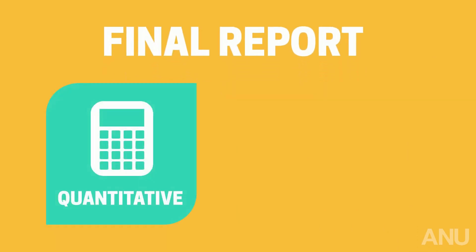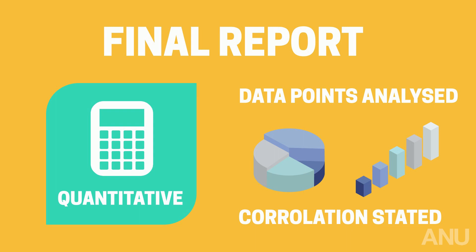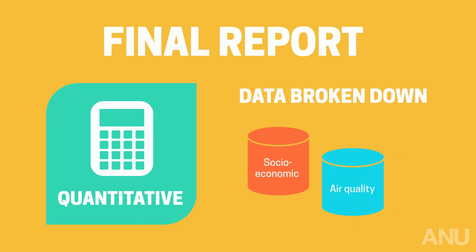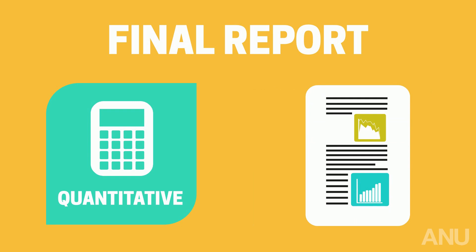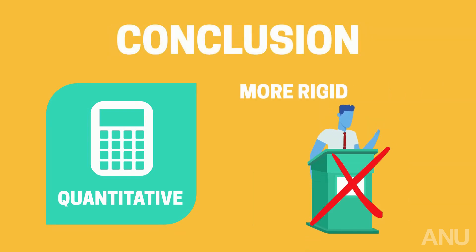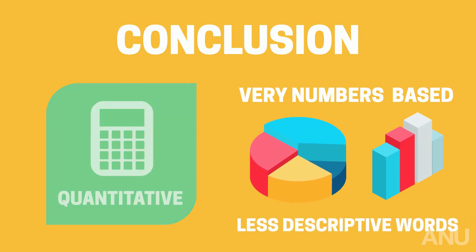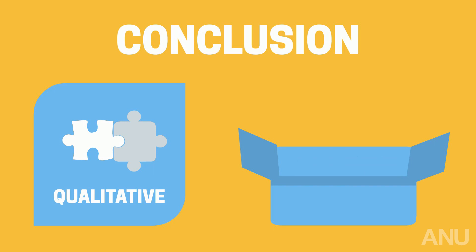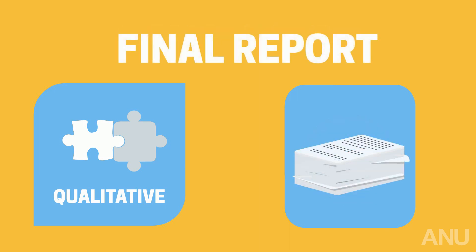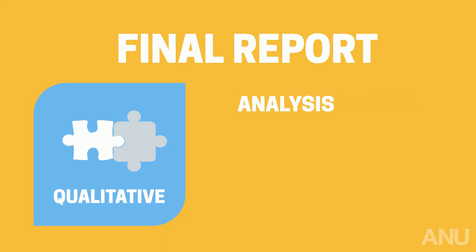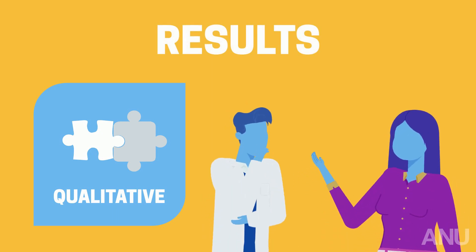For the final report in quantitative research, all the data points are analyzed and the correlation between points is stated. Data is broken down, anything of statistical significance is detailed, and any anomalies are specified. All mathematical modeling used is directly stated in the report. The conclusion is more rigid, definitely not up for debate, and is very numbers-based using complex mathematical algorithms expressed in graphs and statistical data with less descriptive words. For qualitative research, all the information collected is broken down into themes that emerge throughout the research process, which is very time consuming. The report will therefore have a lot of writing, with enormous detail put into the analysis, descriptions, quotes, and observations. The results are up for discussion, with further debate and research into the topic actively encouraged.